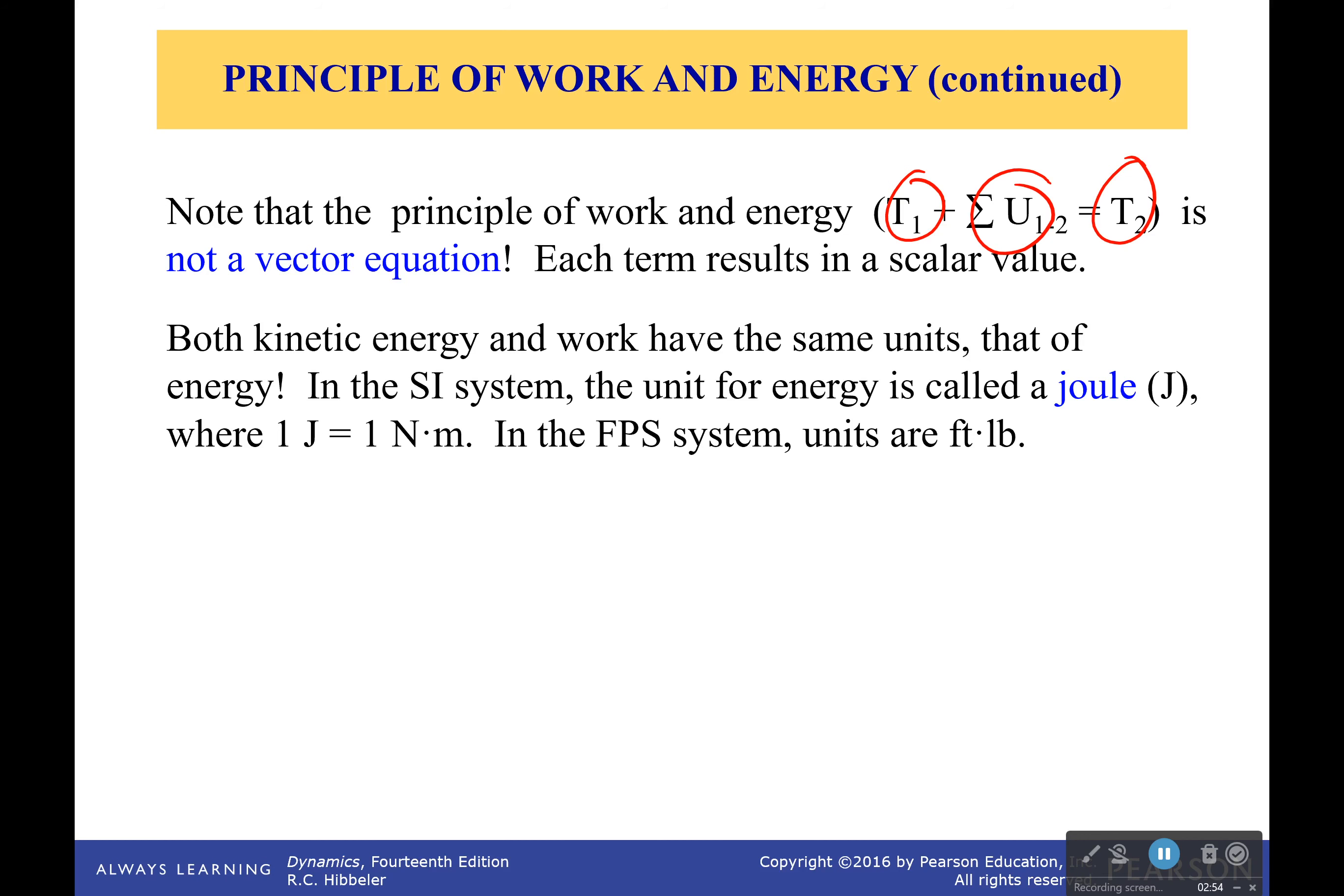When you get work, it is simply a scalar now. Force times distance. You took that dot product and you got rid of all of the vectorness. Now, the units for this energy and work are joules, which is one newton per meter. In the FPS system, it would be foot pounds. Now, this can't be used to find forces that are directed normal to the path because they do no work. If they do no work, they don't have a place in this equation and they can't help you out.